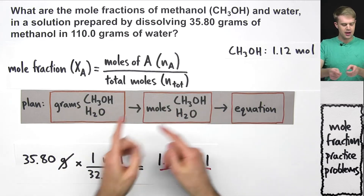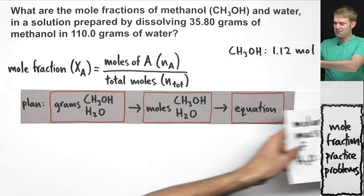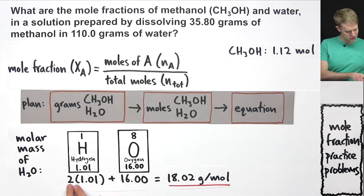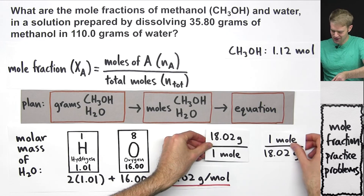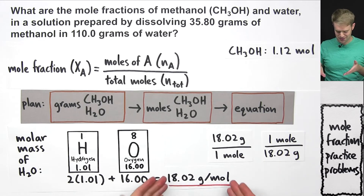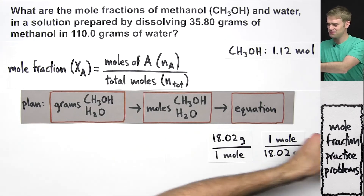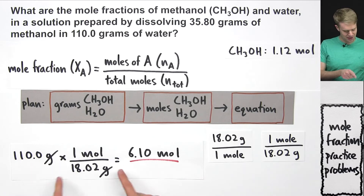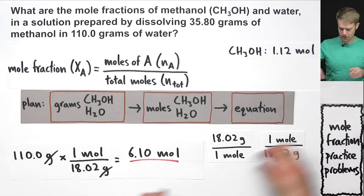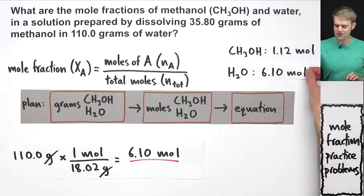Now we do the same calculation for water. The molar mass of water is two hydrogens plus one oxygen, giving 18.02 grams per mole. We take 110.0 grams of water and multiply by the conversion factor so grams cancel out, giving us 6.10 moles of water.